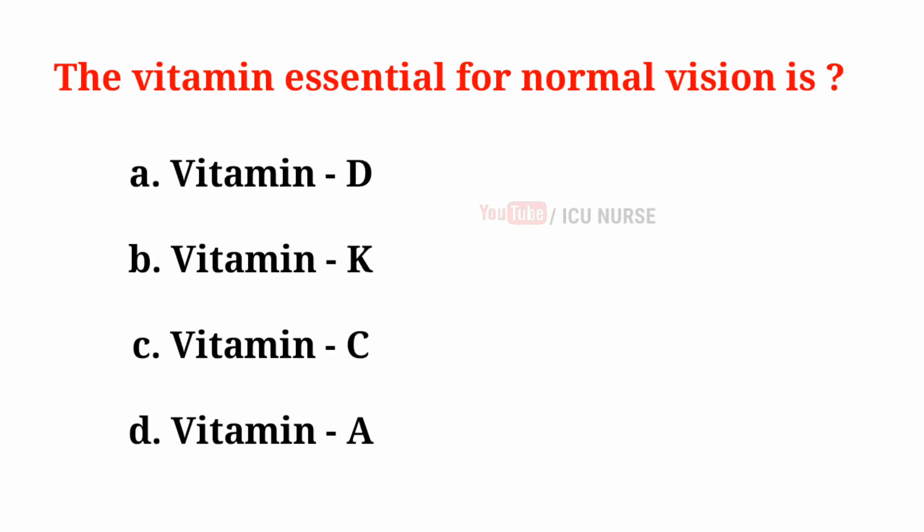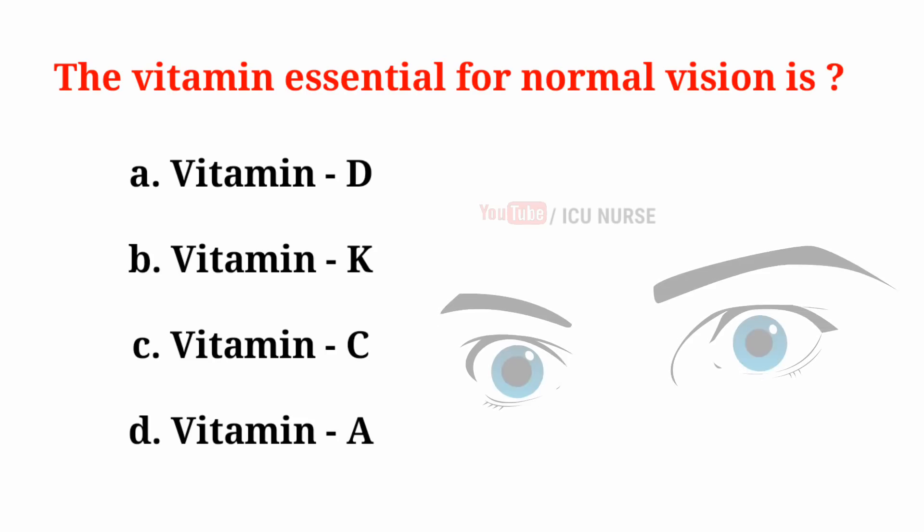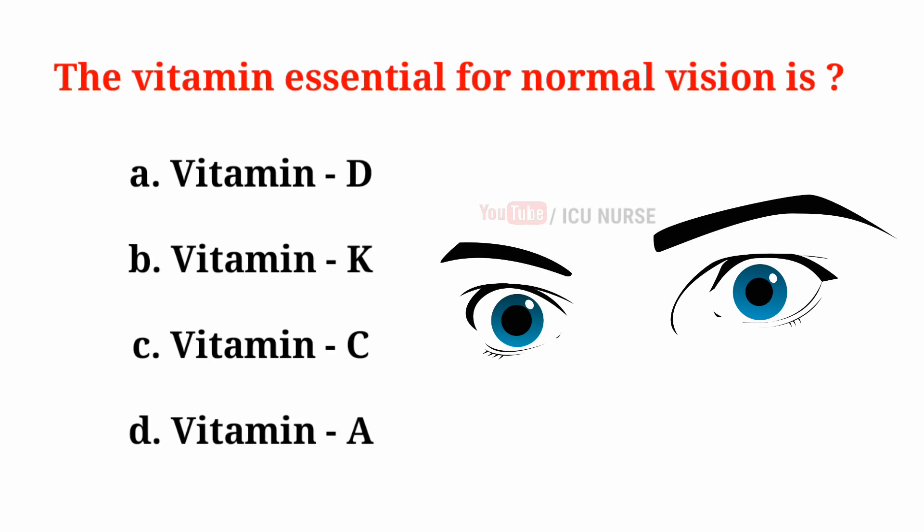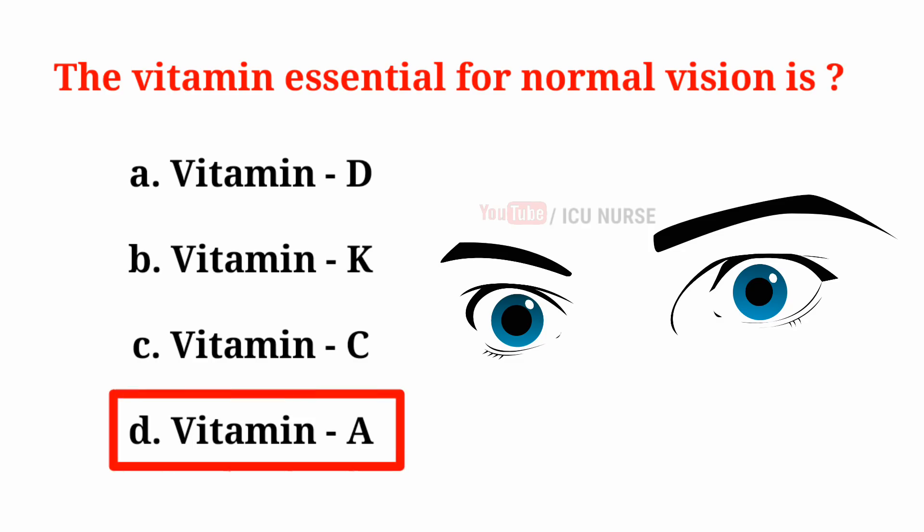The vitamin essential for normal vision is: A. Vitamin D, B. Vitamin K, C. Vitamin C, D. Vitamin A. And the correct answer is D. Vitamin A.